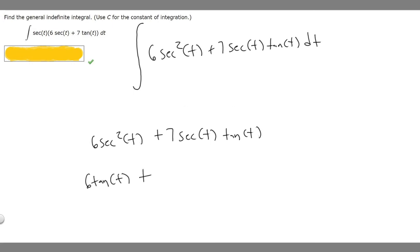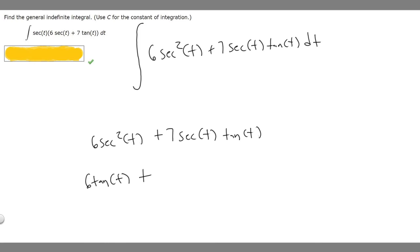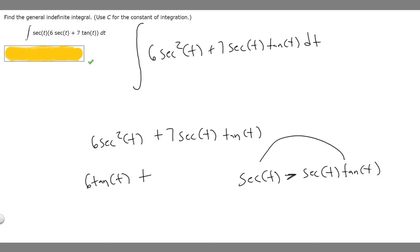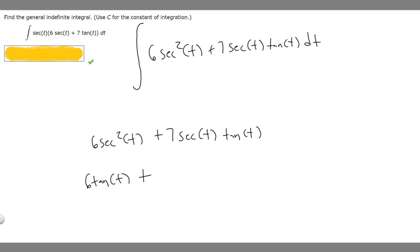Now let's find the antiderivative of 7 times secant of t times tangent of t. We know that the derivative of secant of t is equal to secant of t times tangent of t. So the antiderivative of secant of t times tangent of t is secant of t. Multiplying by 7, it's just 7 times secant of t.